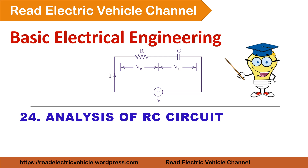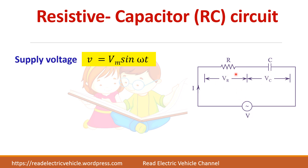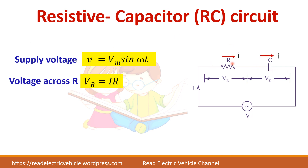In this video we will be seeing about the series RC circuit. In a series RC circuit, the resistor and capacitor are connected in series across the applied voltage, which is given by Vm sin omega t. Since this is a series circuit, the current through the resistor as well as the capacitor remains the same.